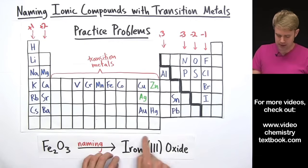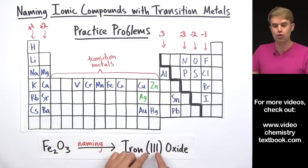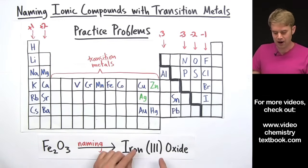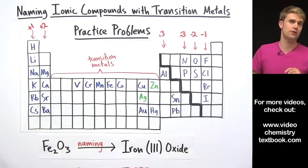When we write the names for formulas that contain transition metals, those names often have Roman numerals in them and we've got to figure out what Roman numeral to put there so we'll get really good at that here.